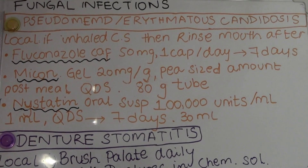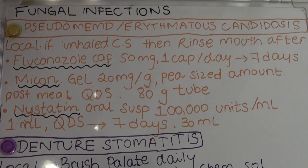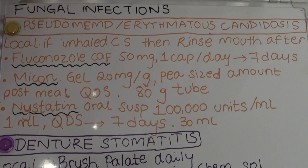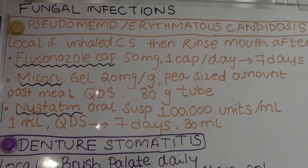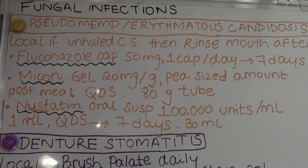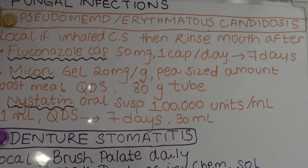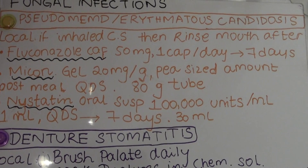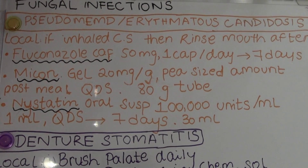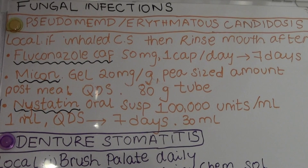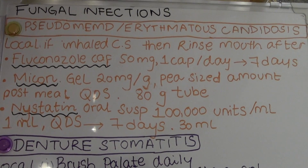In the previous Scottish guidelines they had not mentioned fluconazole, but in the January 2016 guidelines they had mentioned it, which is why I've included it in my lecture. Fluconazole capsule is given as 50 milligrams, one capsule a day for seven days, making seven capsules in total.